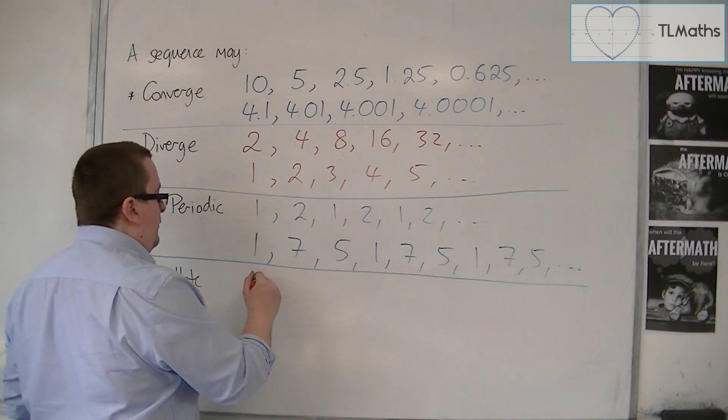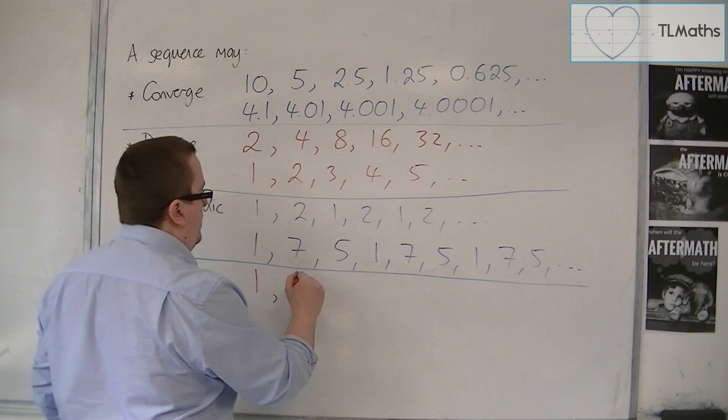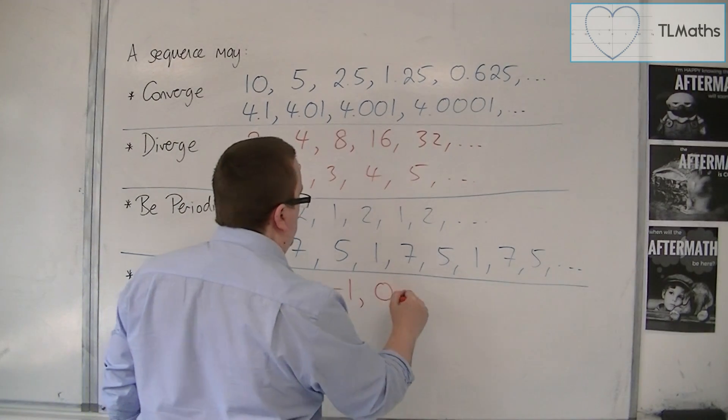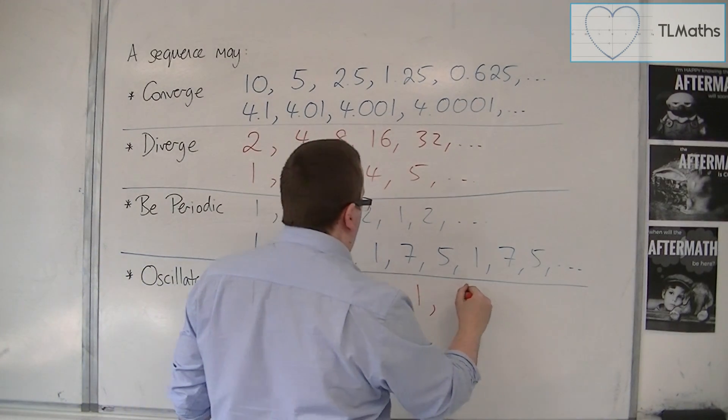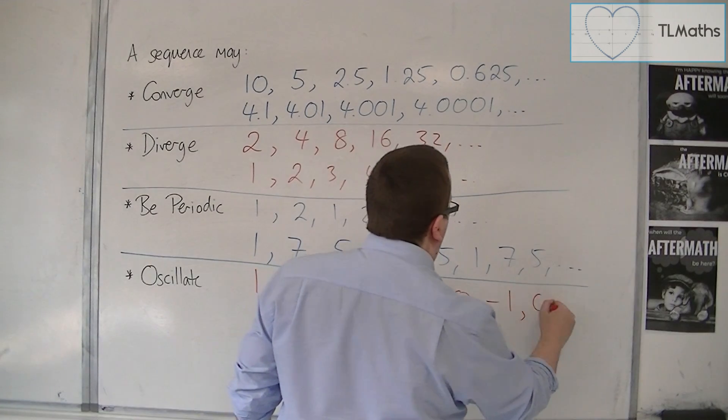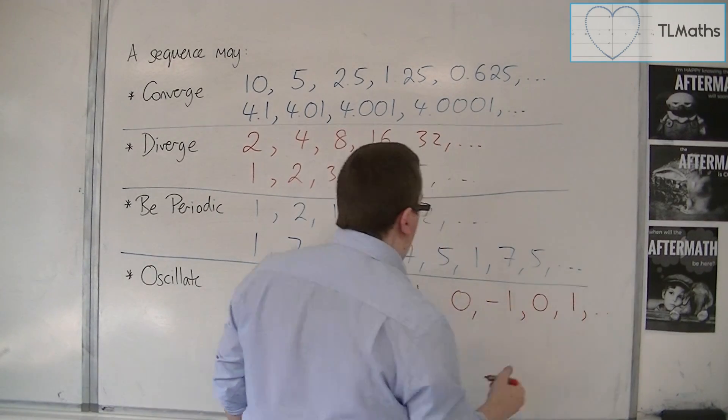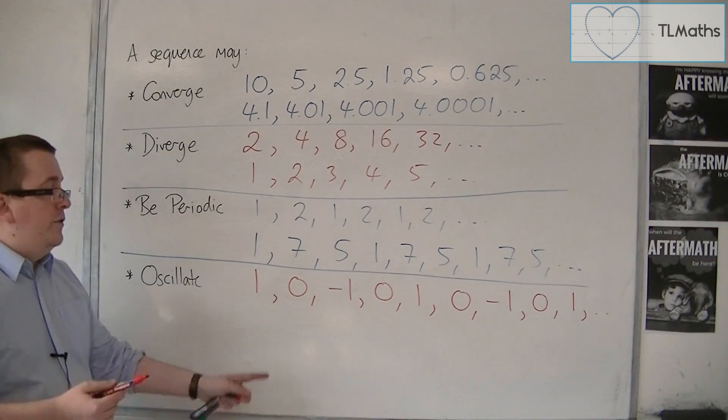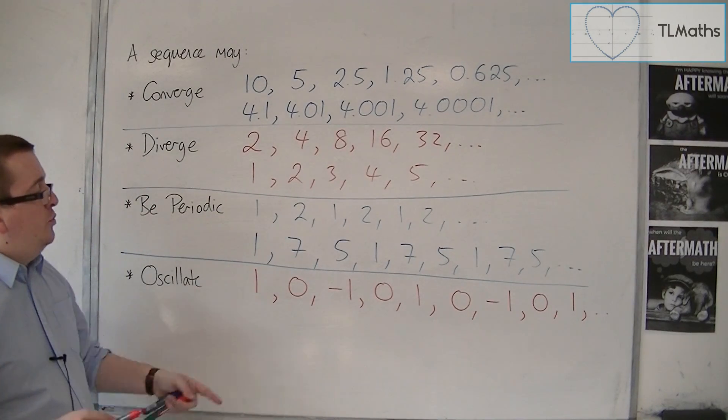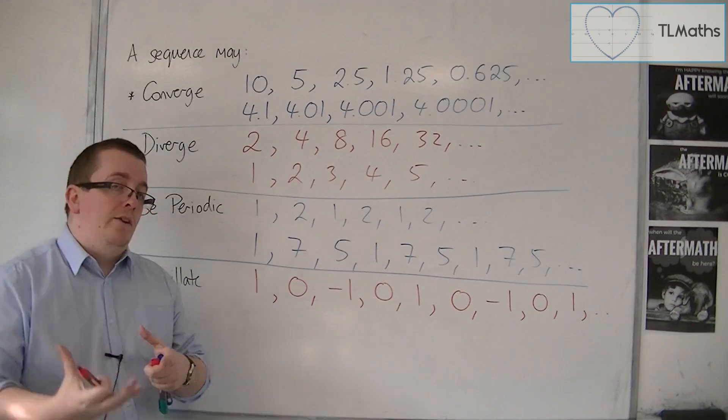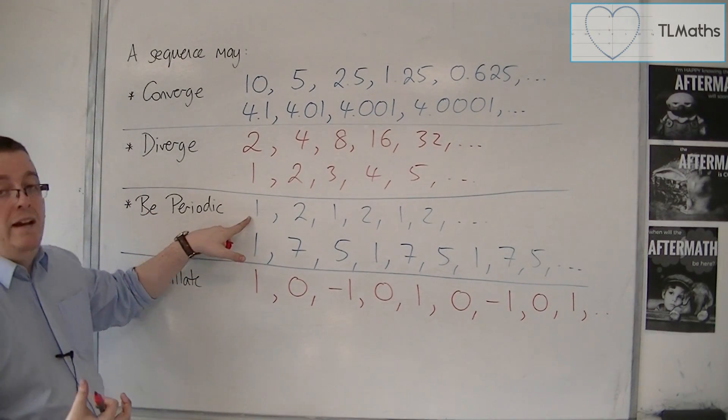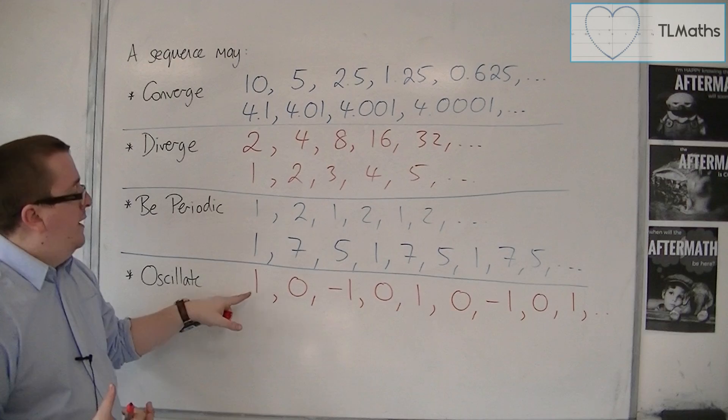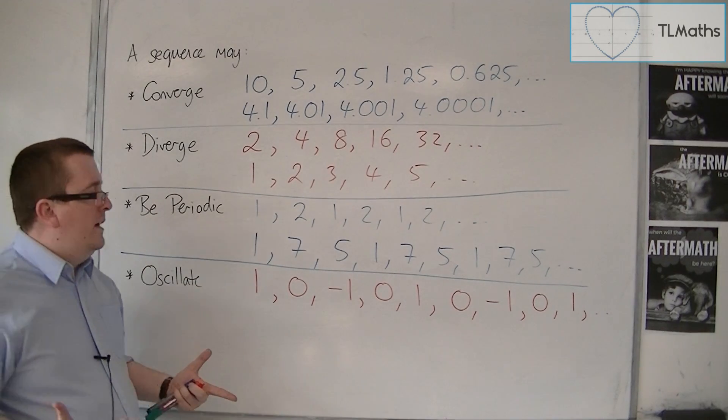You could have something like 1, 0, minus 1, 0, 1, 0, minus 1, 0, 1, etc. And you can see that the values are oscillating around 0. The actual value that you're oscillating around doesn't necessarily have to be part of the sequence.